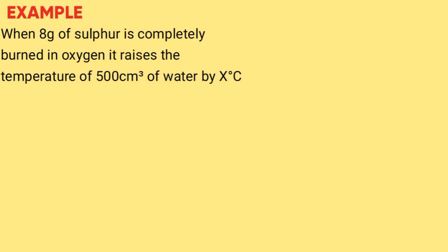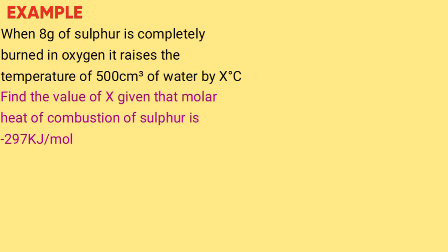Example: When 8 grams of sulfur is completely burned in oxygen it raises the temperature of 500 cm³ of water by X degrees Celsius. Find the value of X given that the molar heat of combustion of sulfur is negative 297 kilojoules per mole. Given d equals 1 gram per cm³, S equals 32, C equals 4.2 kilojoules per kilogram per Kelvin.